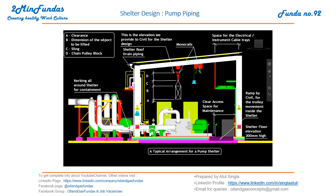For maintenance, that would be the backside of the pump where motor maintenance is planned. There should be a ramp provided by civil for the trolley movement inside the shelter. The elevation, as we have discussed earlier, should be between 100 to 300mm — suppose we are taking 200 in this case.